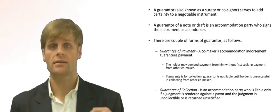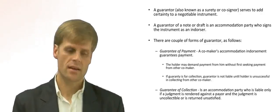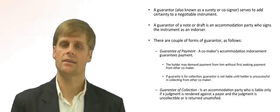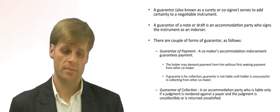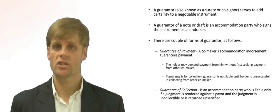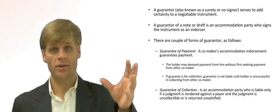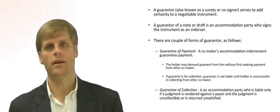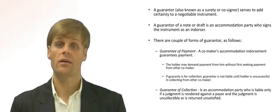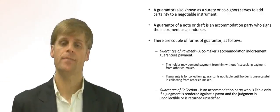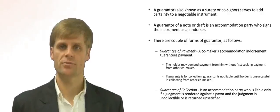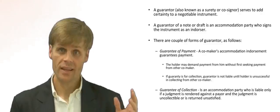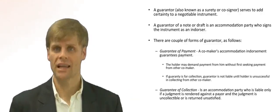The other guarantee is a guarantee of collection, and this depends on the nature of the guarantee or the extent to which the guarantor has obligated themselves. A guarantee of collection is where, if the obligor on the instrument — the payor — does not pay, the party seeking payment might sue the payor. And if they receive a judgment, they can then collect that judgment against the payor or obligor, but they can also collect it against the party guaranteeing collection.